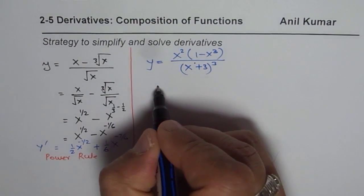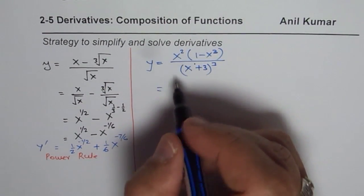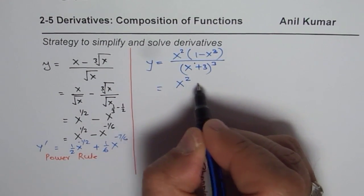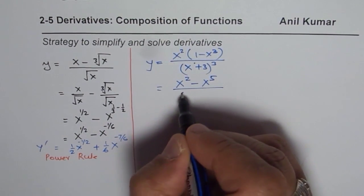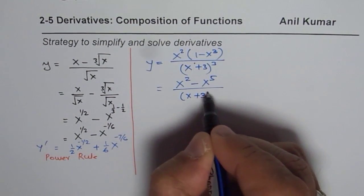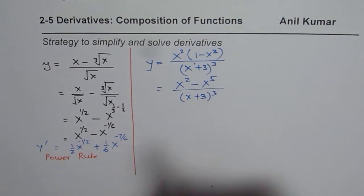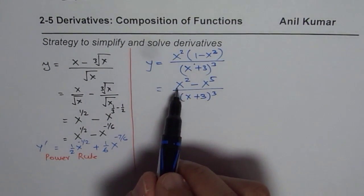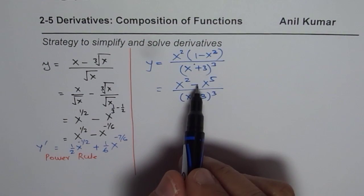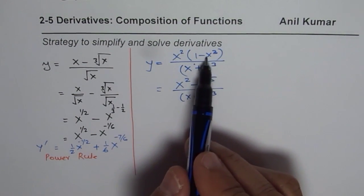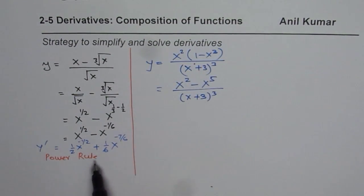Sometimes what you can do is you can actually expand the numerator. So in the numerator, you get x squared minus x to the power of 5. And the denominator becomes x plus 3 whole cube. Now that becomes a simpler function to work with. Since derivative of numerator now is not product rule, it's not product and chain rule. It is a simple power rule.